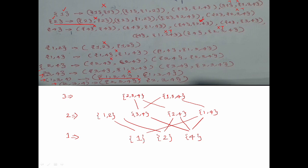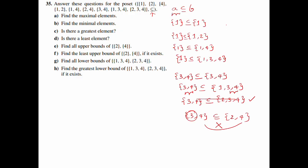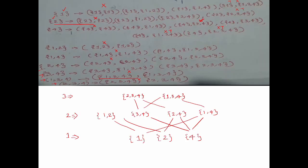Friends, you can solve this question. So if you find the maximal or minimal, that is the same. Maximal is: {2,3,4} and {1,3,4}. Minimal is the same - {1,2,4} is the same. You can solve this question. Thank you. Bye.